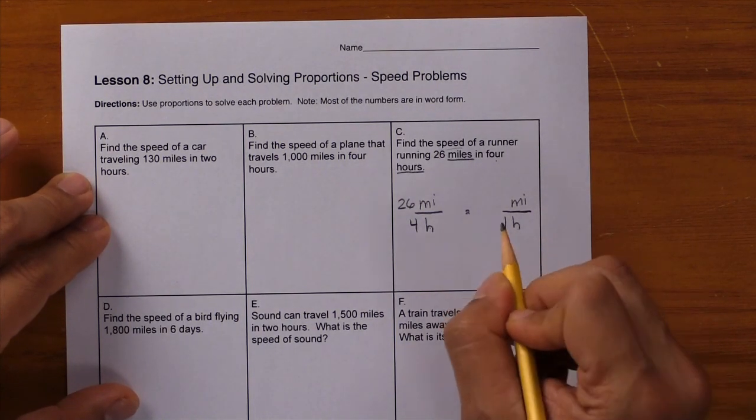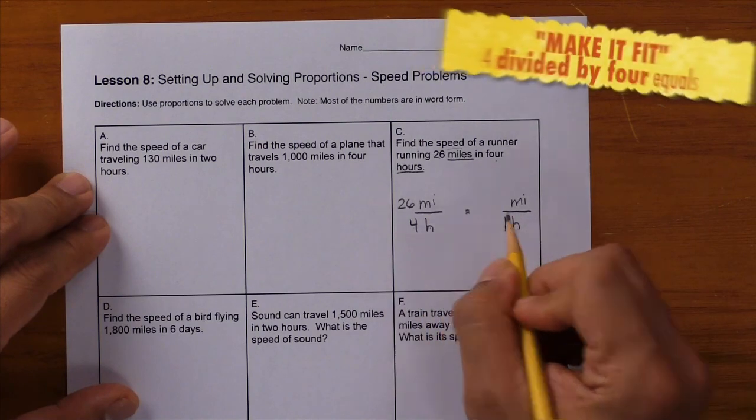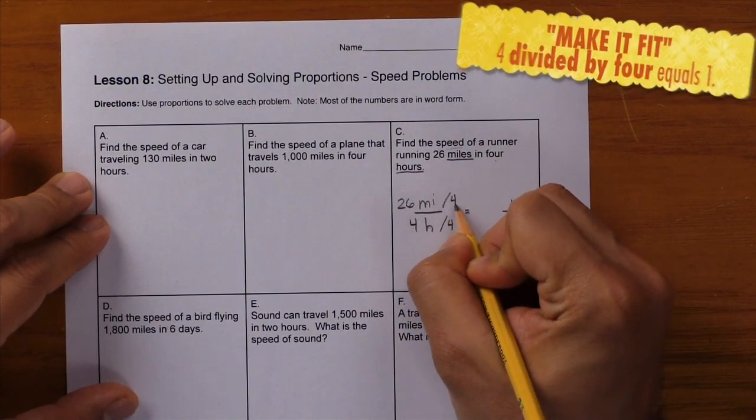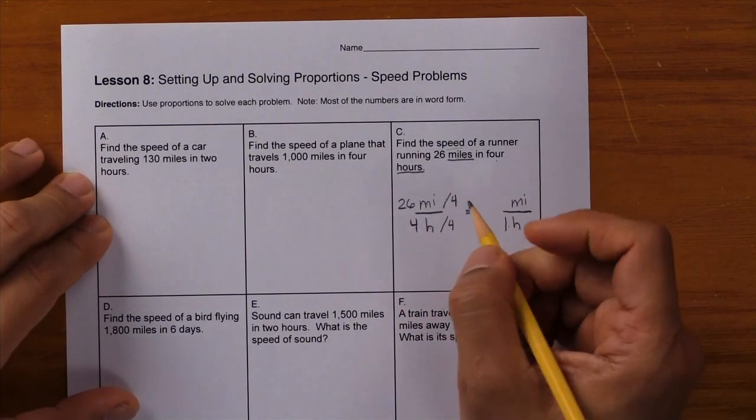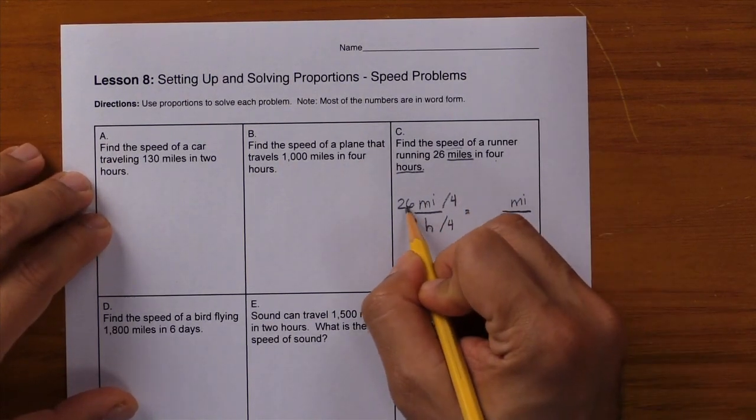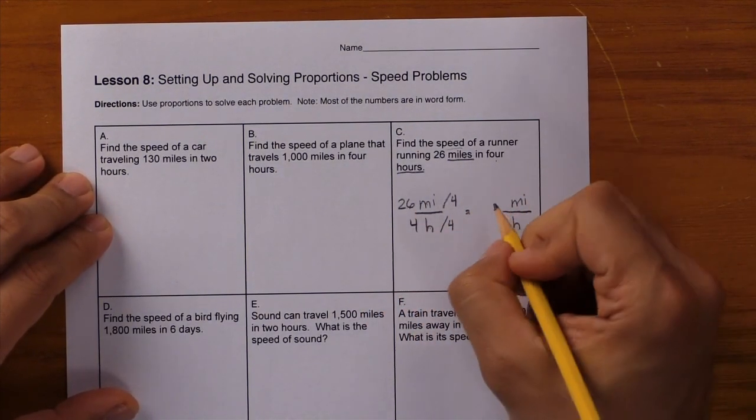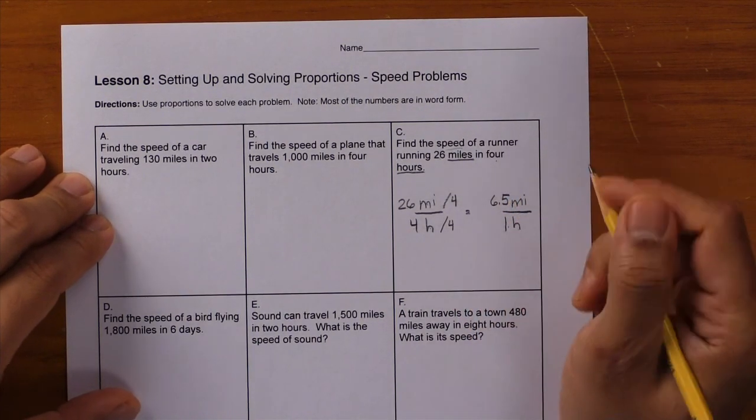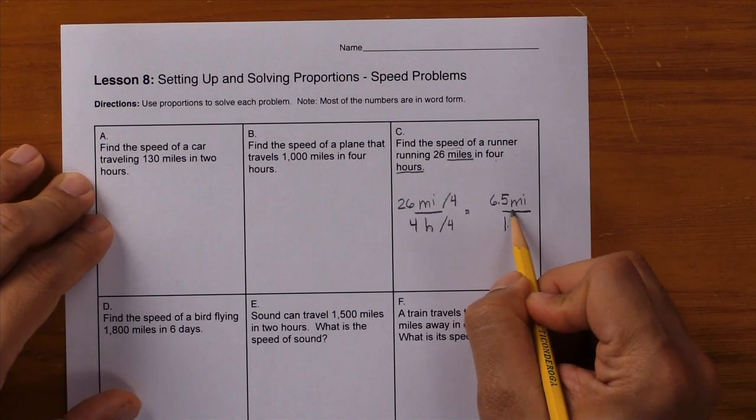How do you go from 4 to 1? We divide by 4. And when you work it out on paper, you'll see that 26 divided by 4 gives you 6.5.